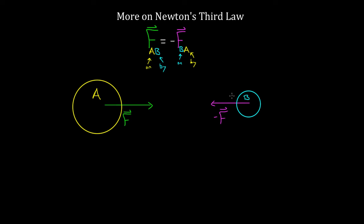These forces are the same magnitude even if the two objects are not the same size. If object A is a big star and object B is a smaller planet orbiting that star — the planet could be millions of times less massive than the star — it would still exert the same force. If this star is pulling on the planet with force negative F, then this planet has to be pulling on the star with force F, and they have to have the same magnitude, even if they are different sizes.